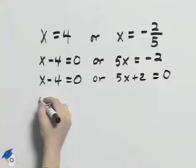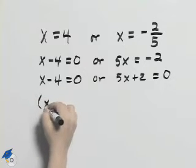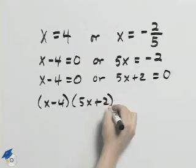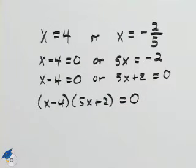Now using the zero factor property backwards we'll have x minus 4 times 5x plus 2 equal to 0. We will now use FOIL to multiply these two binomials.